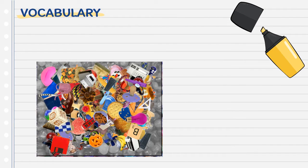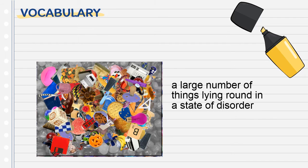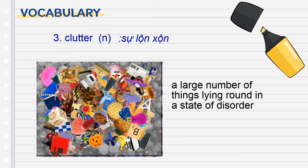One more picture: a large number of things laying around in a state of disorder — một số lượng lớn những đồ vật ở xung quanh trong trạng thái lộn xộn. Vậy thì đó là từ gì? Đúng rồi, it is clutter — có nghĩa là lộn xộn.